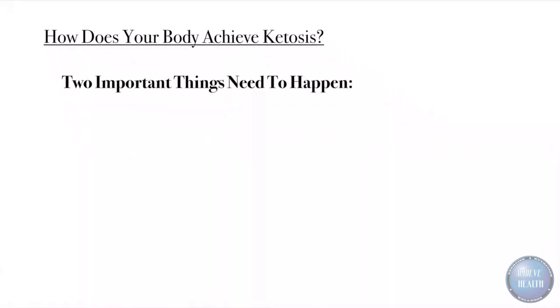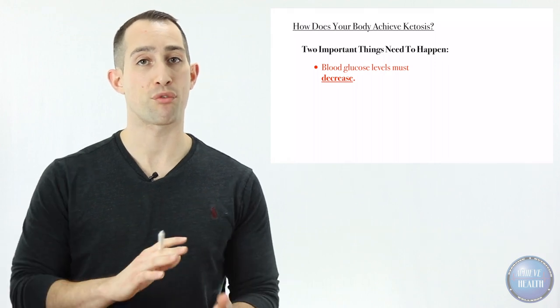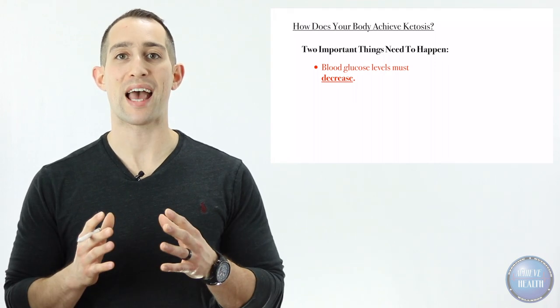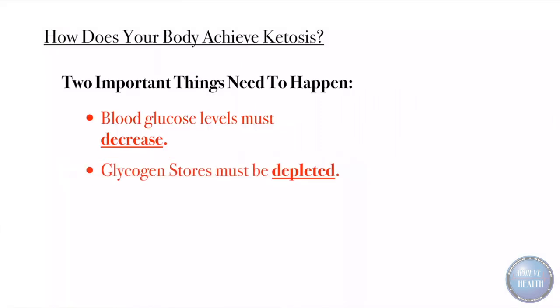Two things need to happen for your body to be put into a state of ketosis. The first thing is that blood glucose levels must drop, so your blood sugar levels, the amount of sugar in your blood running through your body, is going to have to on average be lowered.